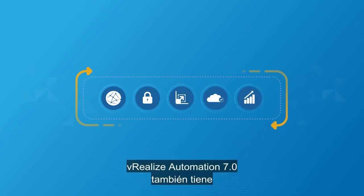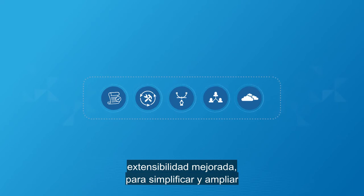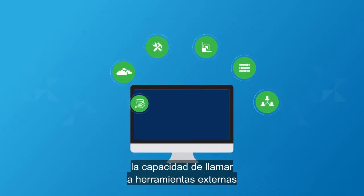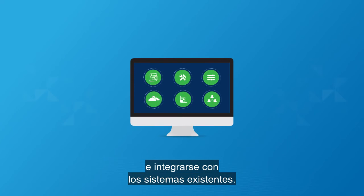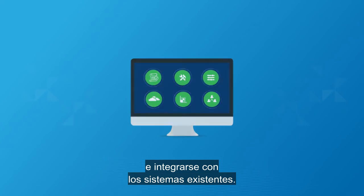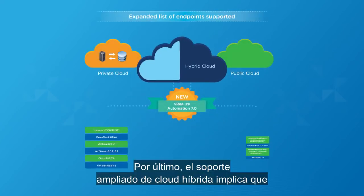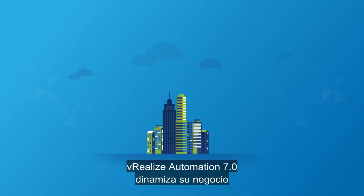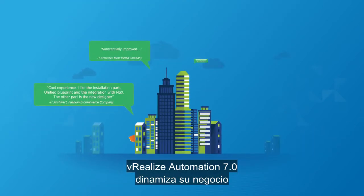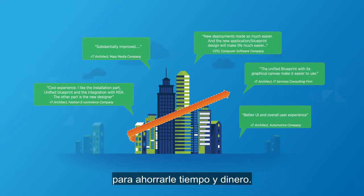vRealize Automation 7.0 also features enhanced extensibility to simplify and expand the ability to invoke external tools and integrate with existing systems. And finally, expanded hybrid cloud support means your users get the best of both public and private cloud. vRealize Automation 7.0 accelerates business to save you time and money.